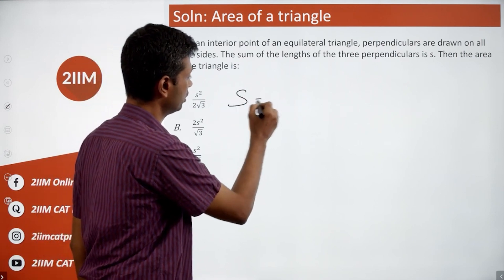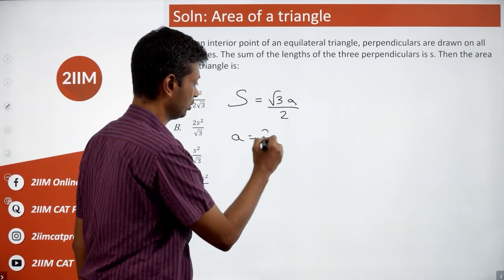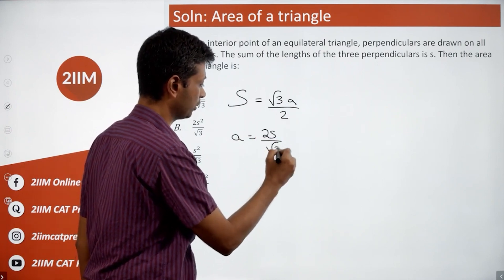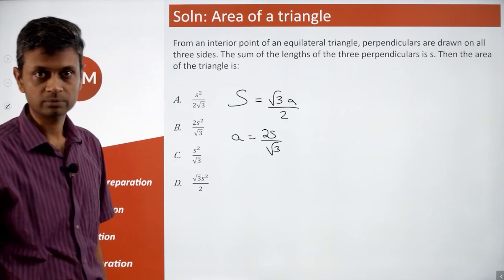The sum of all this is root three A by two. A is two S by root three. Area of the equilateral triangle is root three by four A square that you should know.